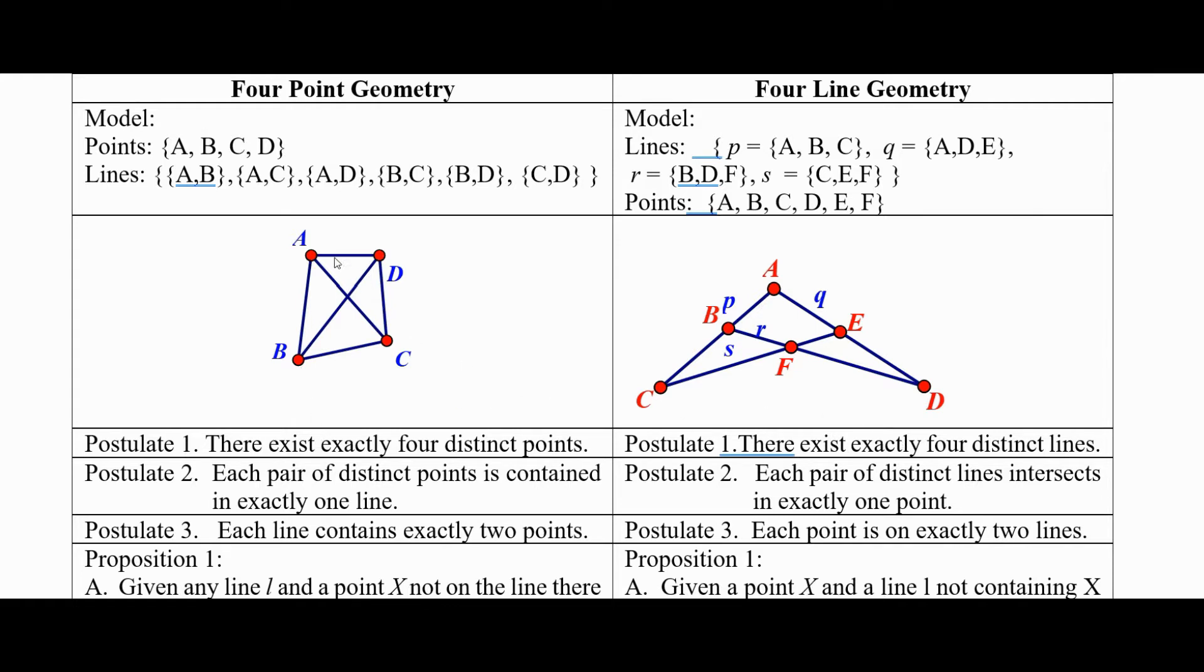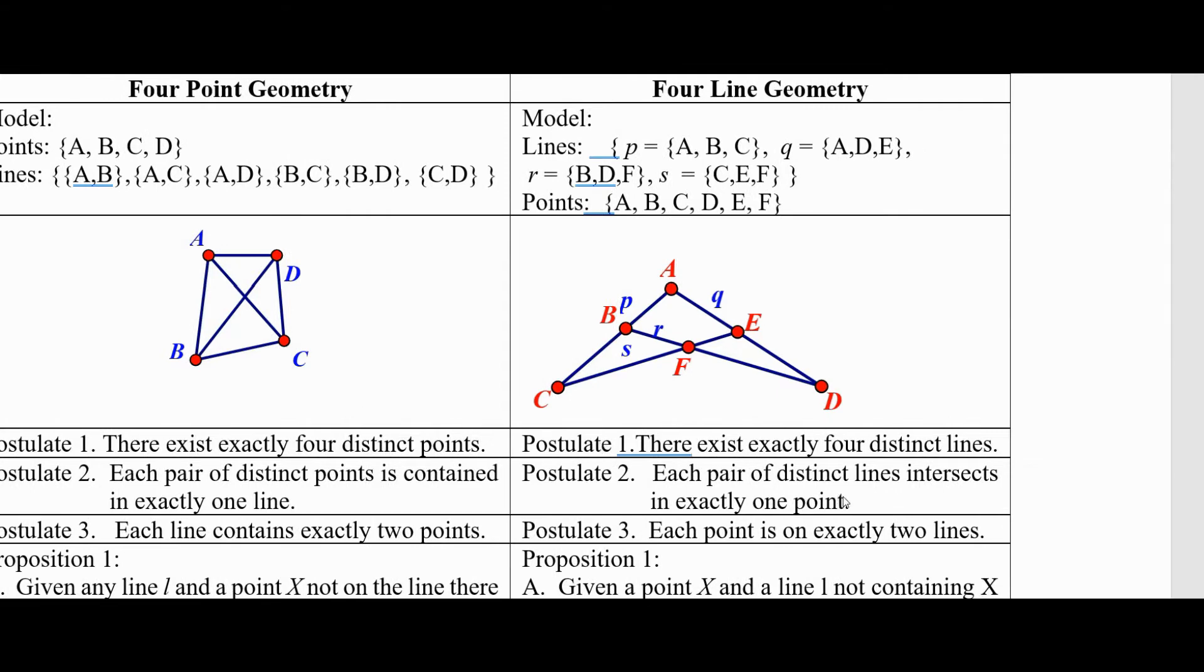So it says each pair of distinct, well, over here on the left, it says each pair of distinct points contains one line. This says each pair of distinct lines intersects in one point. That was our postulate two over here.